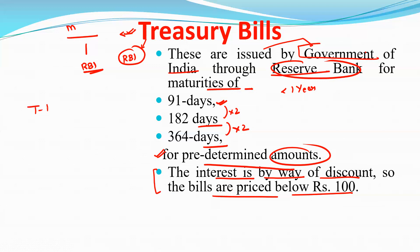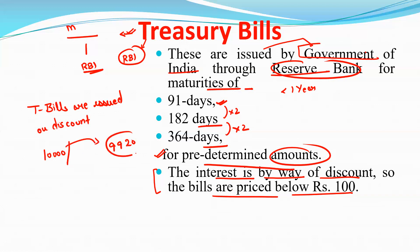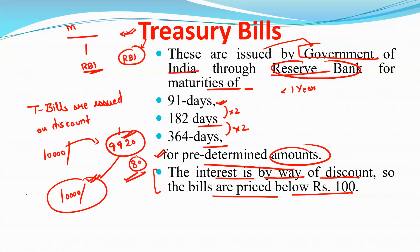Treasury bills are issued at a discount. For example, if a treasury bill is of rupees 10,000, it is issued at 9,920 and on maturity you will get 10,000. So that difference is the interest — the benefit you get from investing in treasury bills. Remember: treasury bills are issued at a discount.